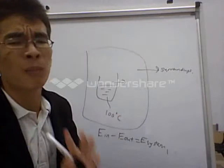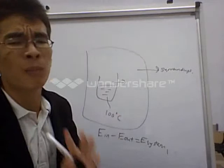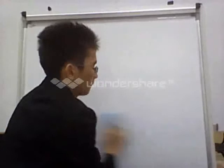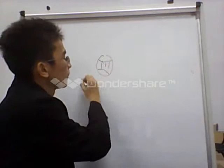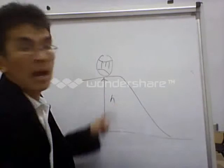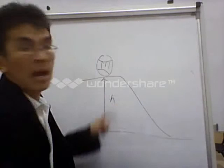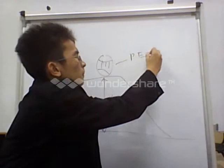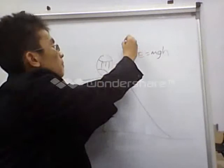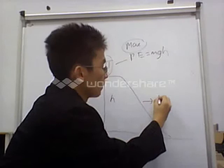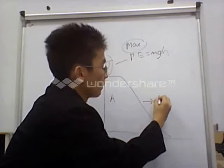Let me give you another example so you can have a better understanding about the first law of thermodynamics. You are given a ball at the top of a hill, and this is a horizontal ground. This is an inclined plane which has a height H. At the top of the hill, the ball has a potential energy of MGH, which is the maximum potential energy. So when the ball starts its motion, it rolls down and will have a kinetic energy known as one-half MV squared.